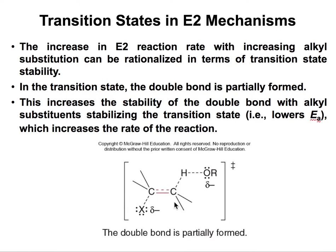This is how the transition state for an E2 mechanism looks. Here we have the alkyl halide and the base attacking the hydrogen being taken away. The two bonds being formed are a pi bond and a sigma bond (to the base), and the two bonds being broken are the C-H bond and the C-Br bond.